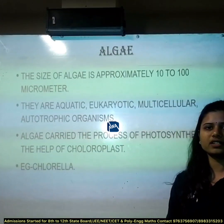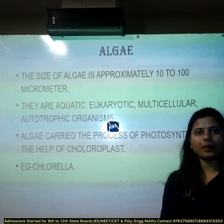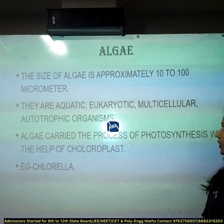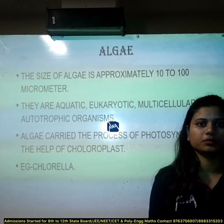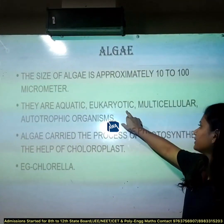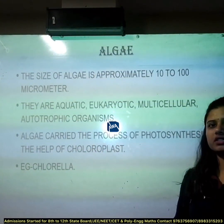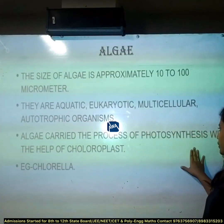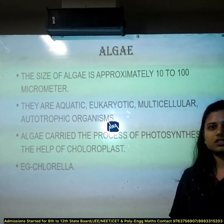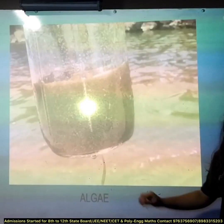Our next microorganism is algae. The size of algae is approximately 10 to 100 micrometers. They are aquatic, eukaryotic, multicellular, autotrophic organisms — eukaryotic means they have a well-defined nucleus, and autotrophic means they produce their own food. All algae carry out the process of photosynthesis with the help of chloroplast. Example: Chlorella.